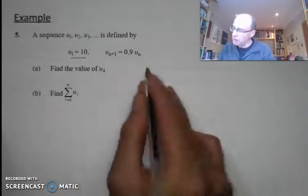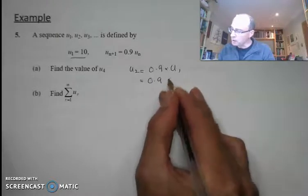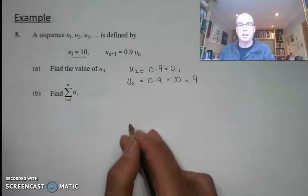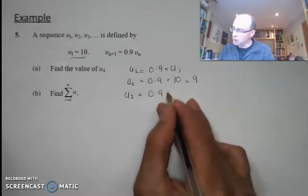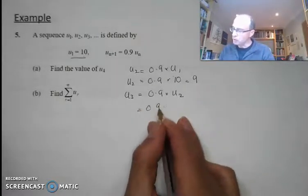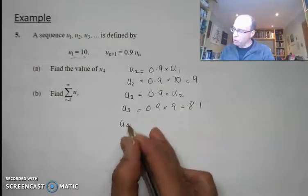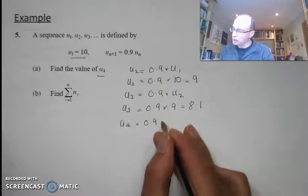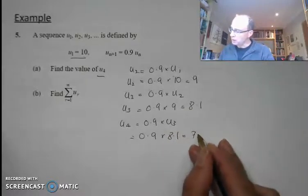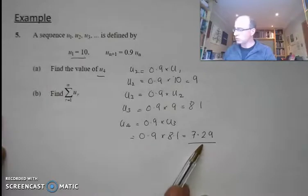U1 is equal to 10. U2 is going to be equal to 0.9 times u1 — that's 0.9 times 10, which equals 9. The third value is going to be equal to 0.9 times u2; u2 is 9, so this equals 0.9 times 9, which is 8.1 — that's my u3. And u4, the value we're looking for, is equal to 0.9 times u3, which is 0.9 times 8.1. You can't do that in your head, so use your calculator: 7.29. So the fourth term in the sequence is 7.29.